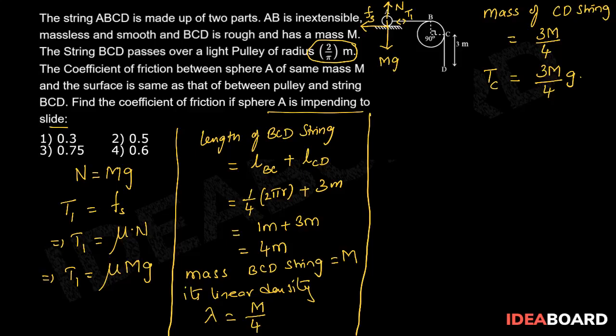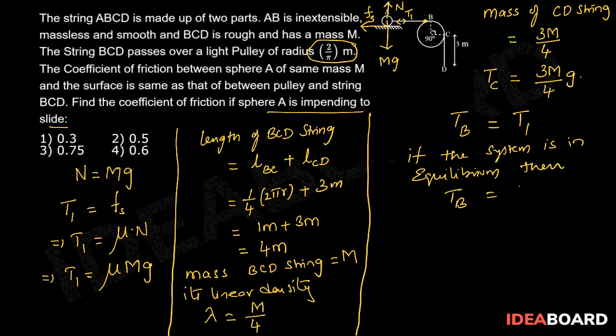Since the system is in equilibrium, tension at B point should be equal to T1. So if the system is in equilibrium, then tension at B should be equal to tension at C.